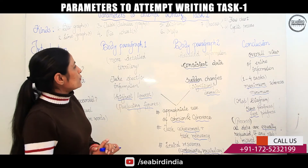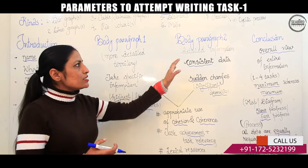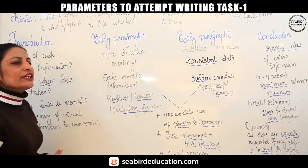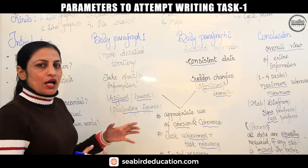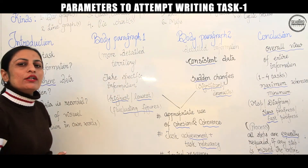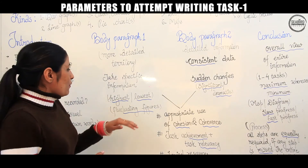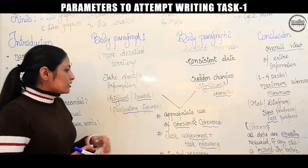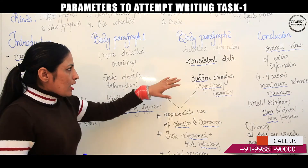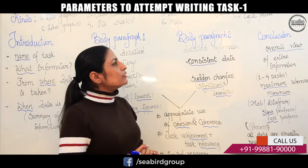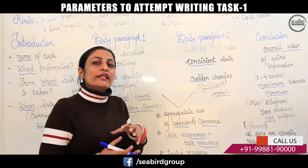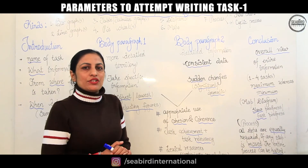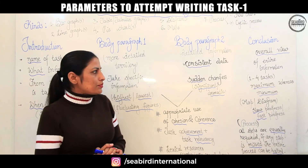The second most important part of your task will be body paragraph 1 as well as body paragraph 2. In body paragraph 1, it is one of the more detailed parts of your task. You have to give specific information given in your task. You can explain yourself by comparisons of highest with lowest, then fluctuating figures. The same will be followed in paragraph 2, where you will go for detailed information of consistent data which does not change over the overall time period.